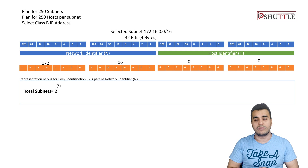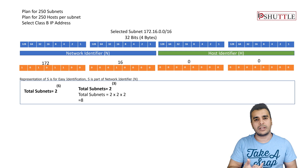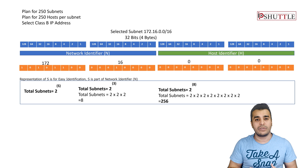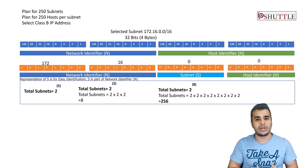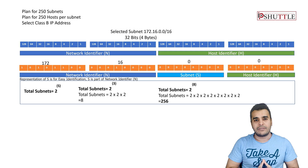For example, we need 250 subnets. If you try 3 bits — 2x2x2 — you get 8, which does not meet the requirement. Keep incrementing until you reach the required number. In our example we will need 8 bits: 2^8 gives 256 subnets. Our requirement is 250, so this meets it. It is absolutely fine to waste a few subnets. The first part is complete — we need 8 bits.